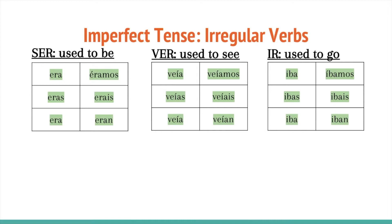Here, you're going to have to be very careful because you have an accent on almost every 'i' that you see on this chart. The only 'i' that is not accented is in 'erais.' And if we go back to ser, see that the 'e' is the only one that's accented. Notice how in the yo and él, ella, and usted forms, we have the same verb being used.